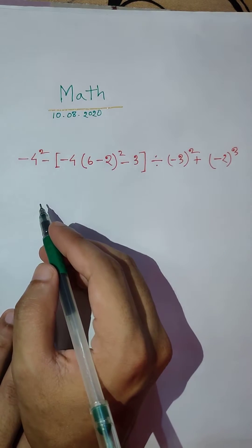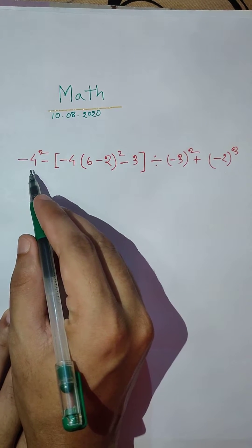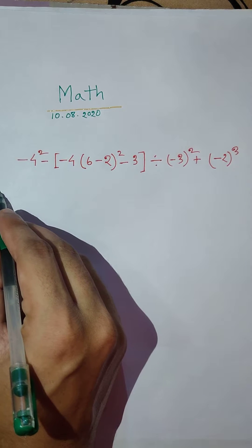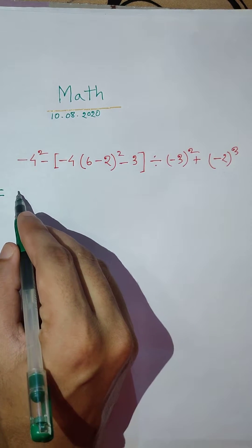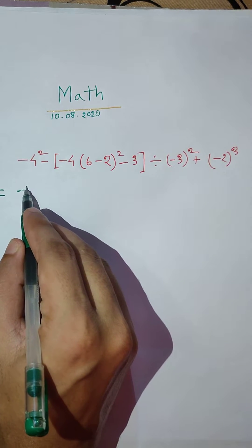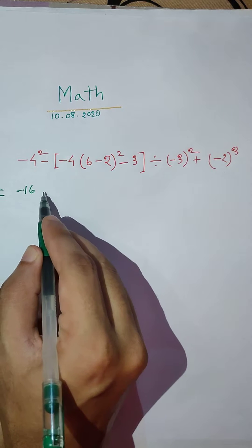I solved this viral math. Minus 4 squared. Minus 4 squared equals minus 16.